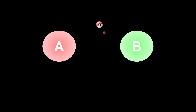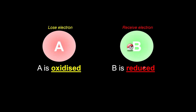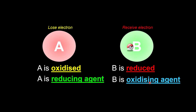If A loses the electrons, then whoever loses electrons undergoes the process of oxidation. Meanwhile, the electrons lost must be received by someone — so let's say B receives the electrons, meaning B undergoes the process of reduction. Because A causes B to receive the electrons, we say A is the reducing agent. And B is the oxidizing agent because it causes A to lose electrons.